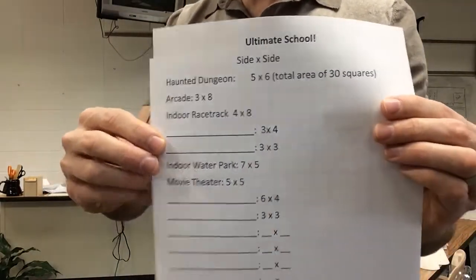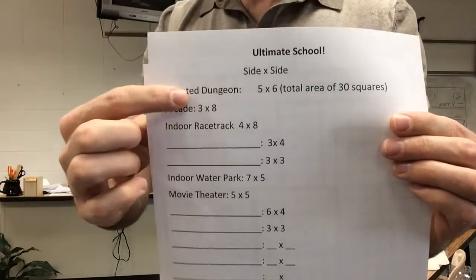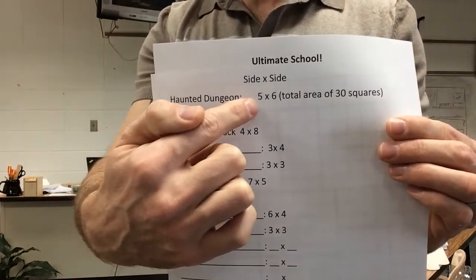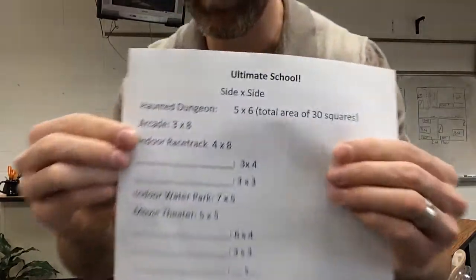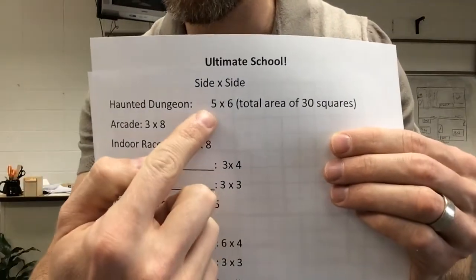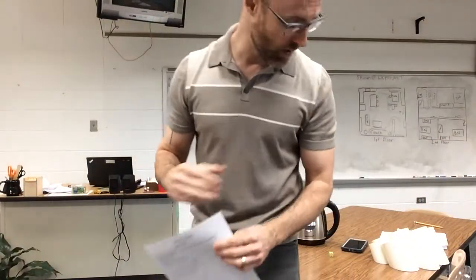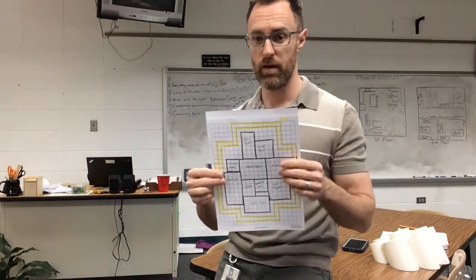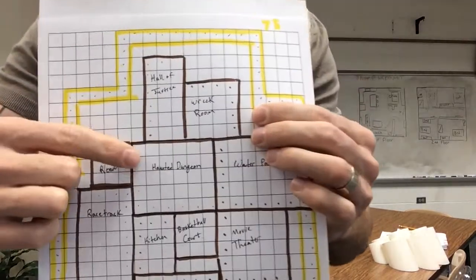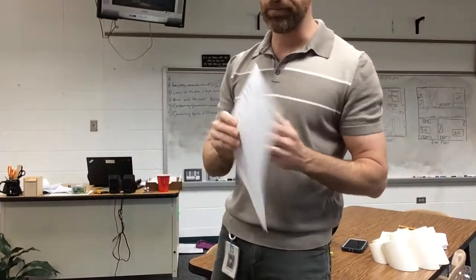I've given you the rooms and I've given you the side times the side — length and the width. So if you plot it out, the haunted dungeon: you're gonna get five times six, which will give you an area of 30 squares. Here's my haunted dungeon — I'll put it right in the middle to get started, make sure I had room for all the other rooms.